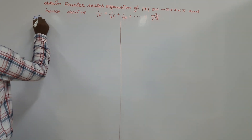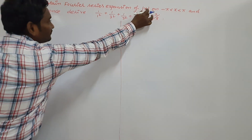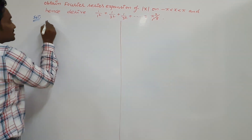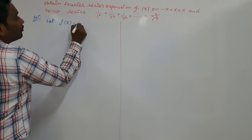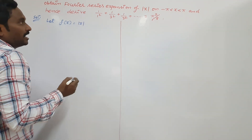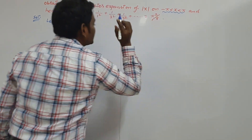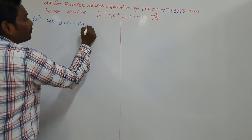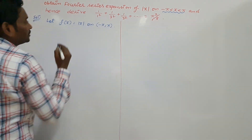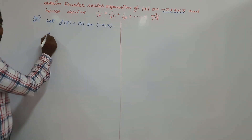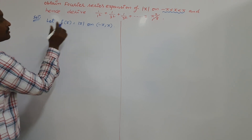First of all, we have to write the given function. Let us represent the given function as f of x. Let f of x equal to modulus of x, where minus pi is less than x is less than pi — that is, the open interval minus pi comma plus pi. So first of all, we are going to verify whether this function is even or odd.